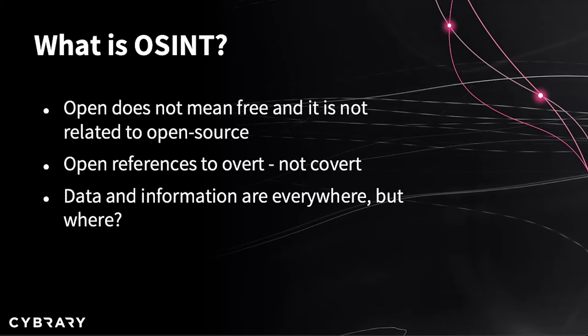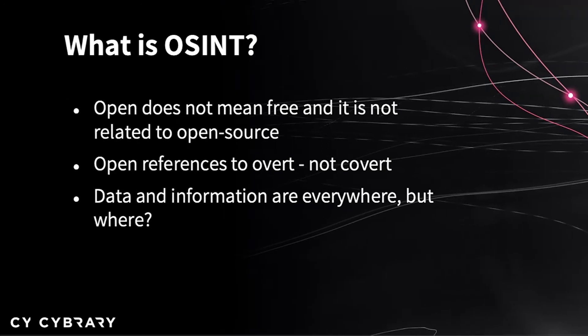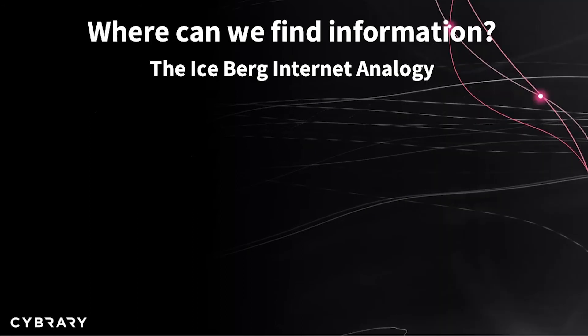Since we will gather almost all of our information from the internet, we can freely say that information is everywhere — enormous amounts of data are all over the place. But where? I will show you an illustration of the internet which maybe you have seen before, since it is a pretty popular analogy: the iceberg analogy. People often confuse terms like the internet, www, deep web, and the dark web. Those terms are related but they mean different things, so I would like to demystify them for you.